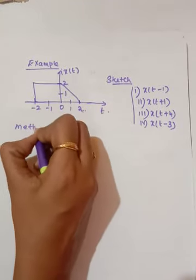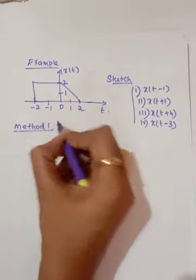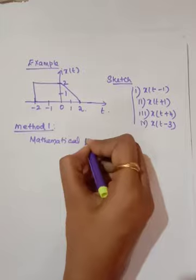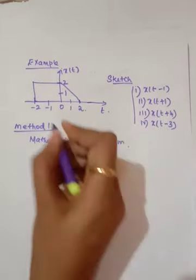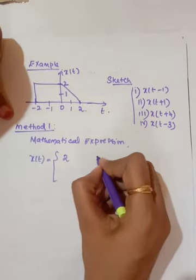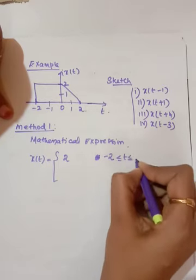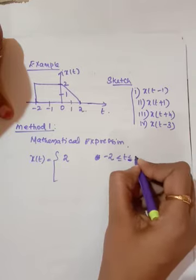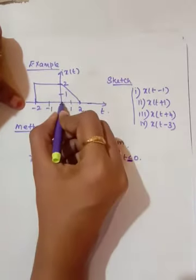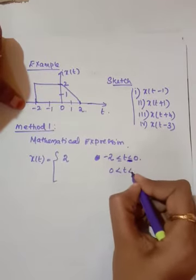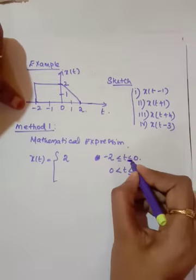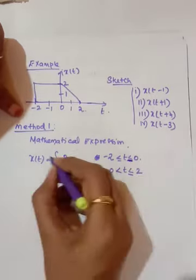First I will explain Method 1, then we will see Method 2. In Method 1, you need a mathematical expression. For x(t), it equals 2 for the range -2 ≤ t ≤ 0. Then I need to write the expression for 0 to 2, so that is 0 < t ≤ 2. Depending on the boundary conditions you can take less than or less than or equal to.